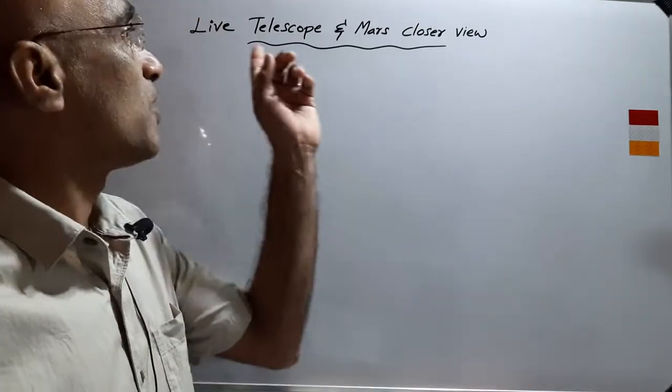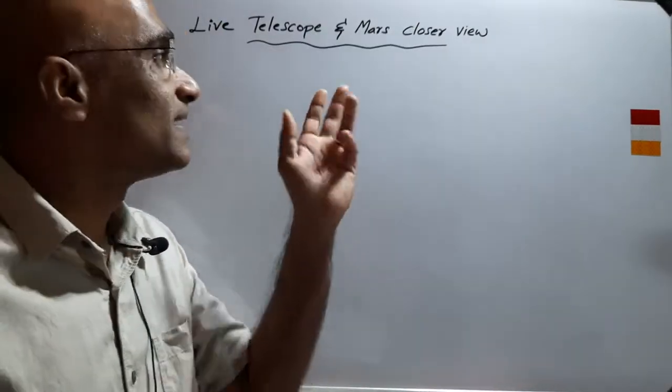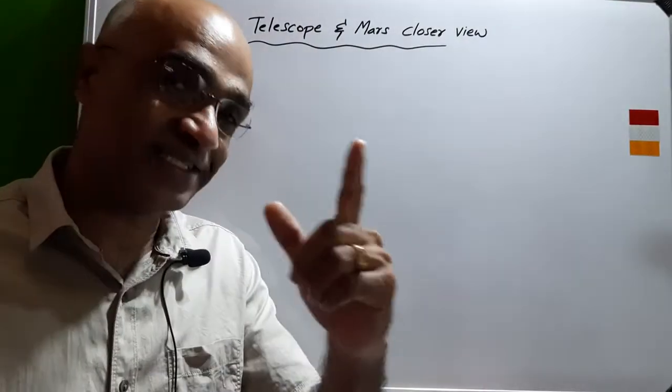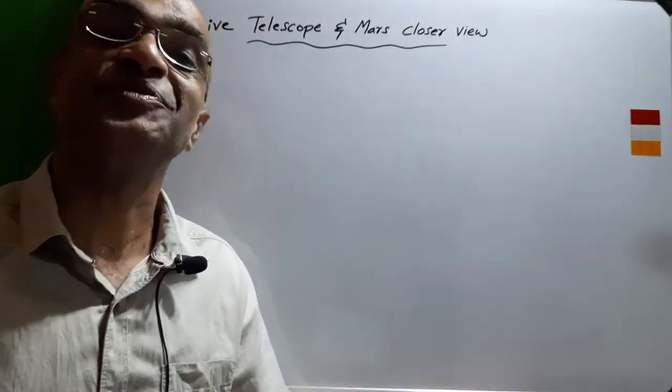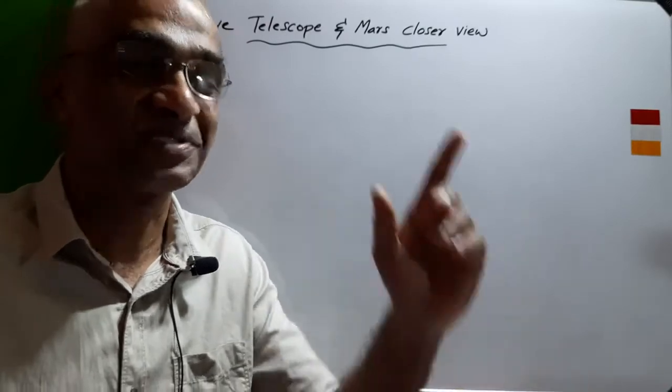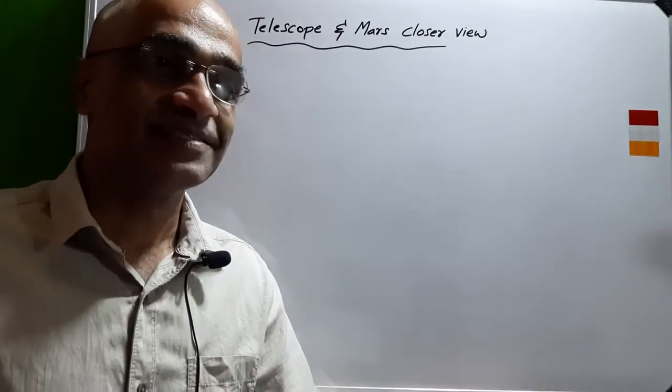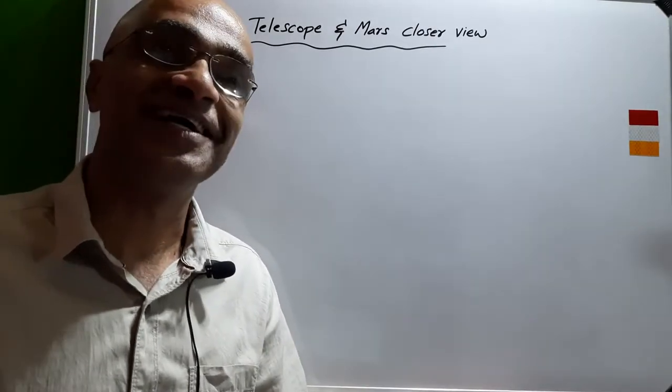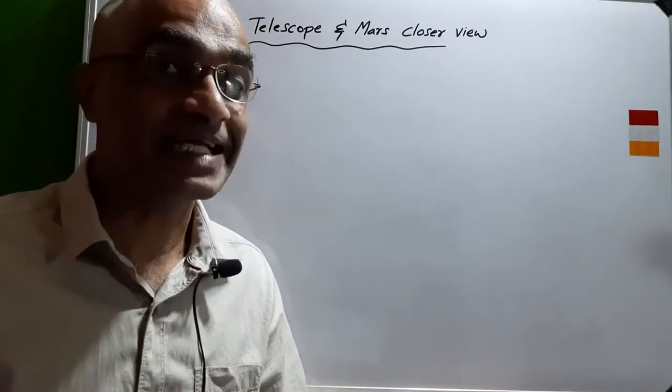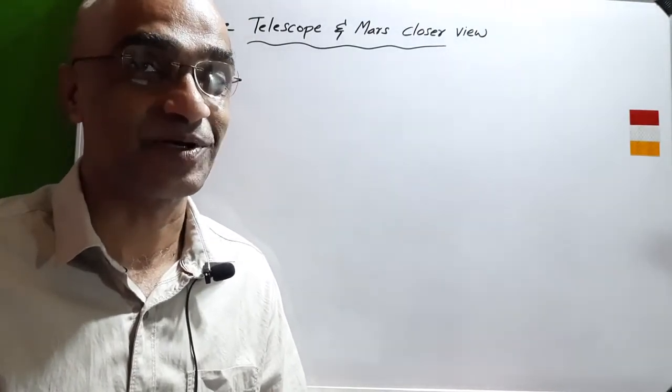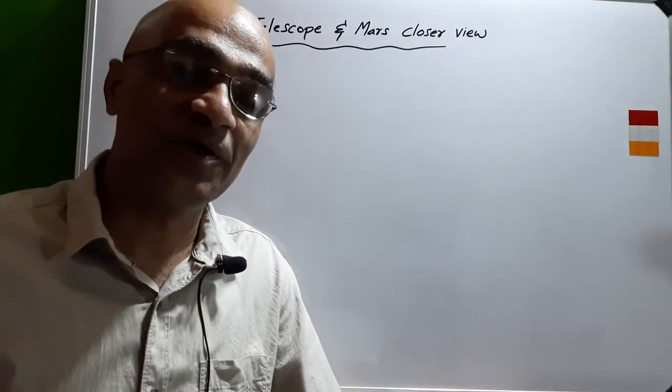Our discussion will be about a live telescope and then the closer view of the planet Mars. First, the definition: a telescope, as you know, is a device that is used for viewing distant objects. Precisely, I'm going to talk to you about the astronomical refracting telescope because that is of interest in the present scenario.